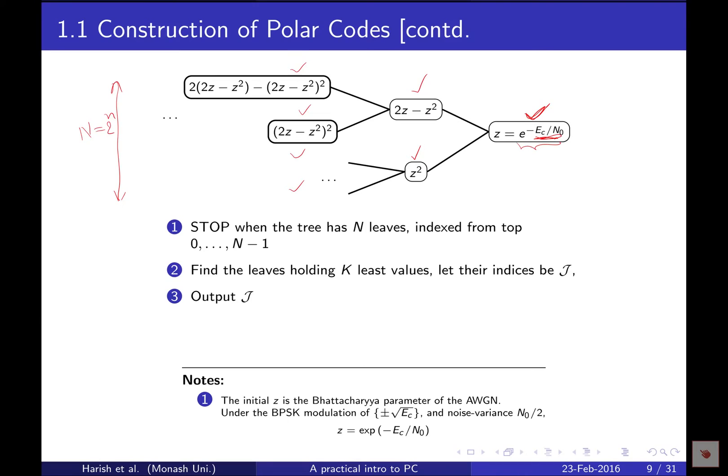We stop precisely after small n levels because after one level there are 2^1 nodes, after two levels 2^2 nodes, and since we need 2^n values, we stop after n levels of recursion. Once we stop, observe those N values, pick the K least values, let their indices be in the set J, and output that set.